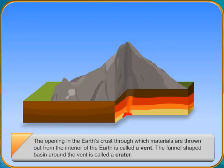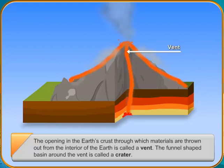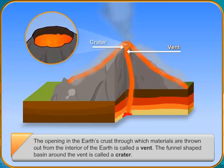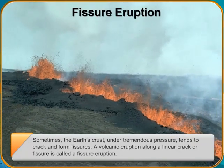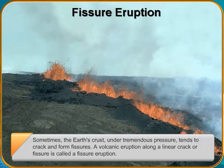The funnel-shaped basin around the vent is called a crater. Sometimes the Earth's crust under tremendous pressure tends to crack and form fissures. A volcanic eruption along a linear crack or fissure is called a fissure eruption.